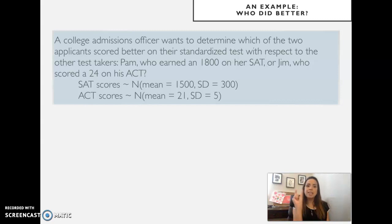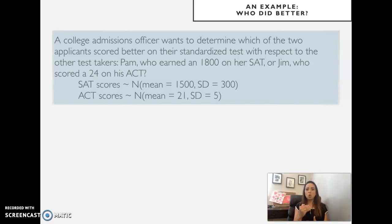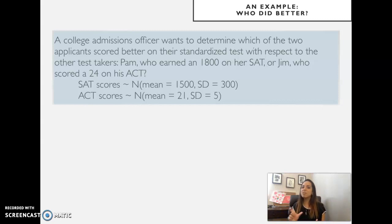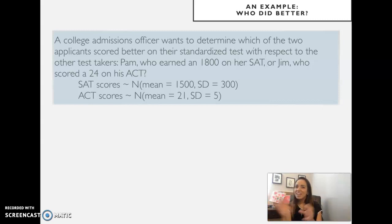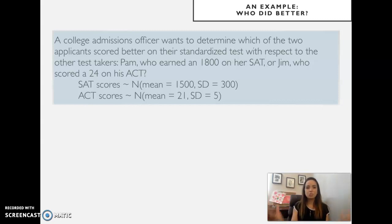That 10 above 1500 does not mean the same as being 10 above a mean of 100. Being 10 above 100 seems relatively better than being 10 above 1500. So we need a way of normalizing these raw scores in order to make a fair comparison when they come from different distributions.